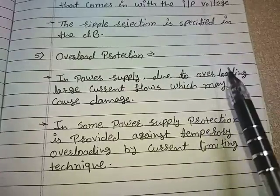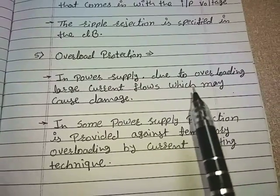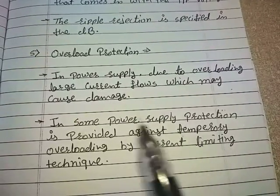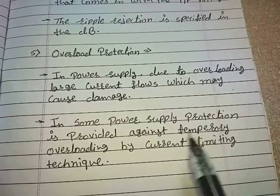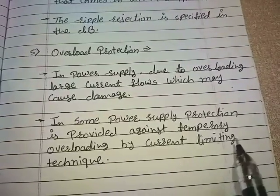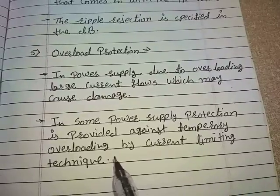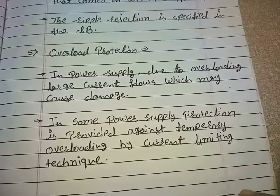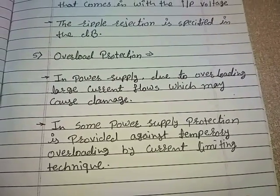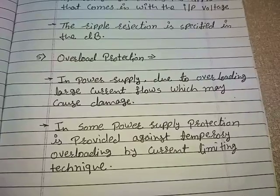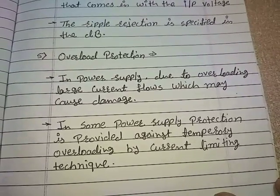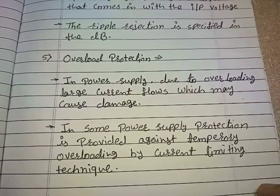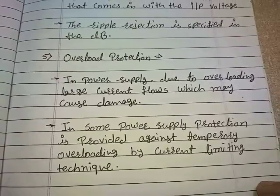The last characteristic is overload protection. In a power supply, due to overloading, large current flows which may cause damage. In some power supplies, protection is provided against temporary overloading by a current limiting technique. We will study how this overload protection is implemented in upcoming lectures. From the next lecture we will start the topic of voltage regulation, and the first voltage regulator we are going to learn is the Zener diode as a voltage regulator. Thank you.